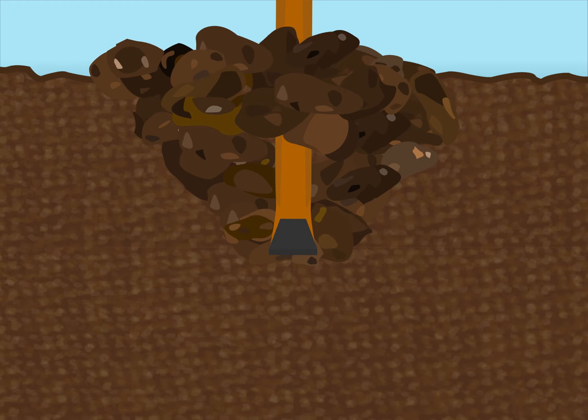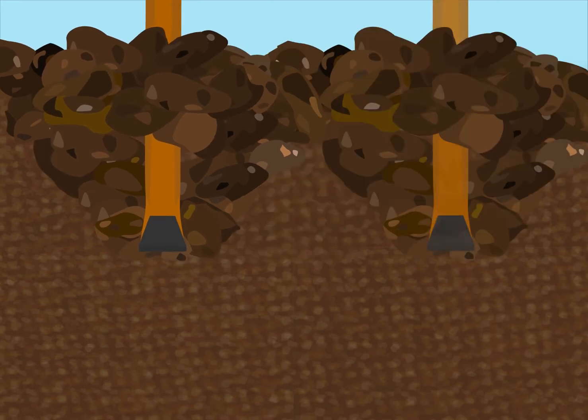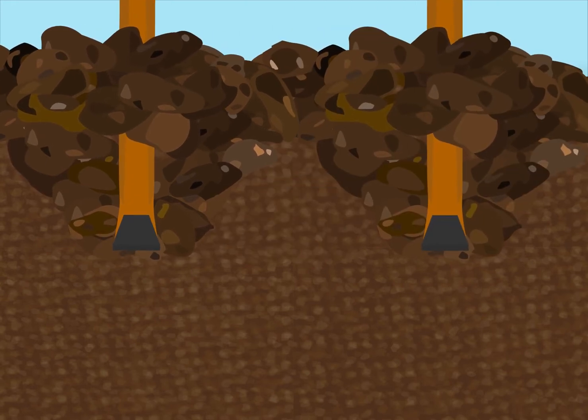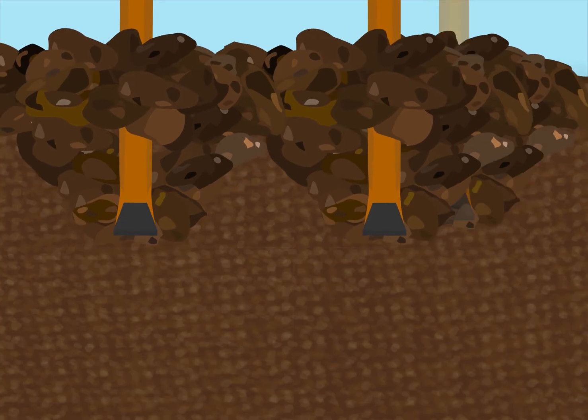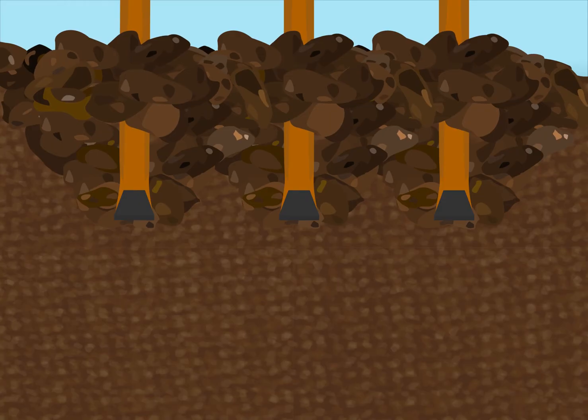Loosened soil forms a V-shaped breakout pattern from the base of the point to the surface. Depth of ripping and the spacing of ripping tines determines the shape of the V.